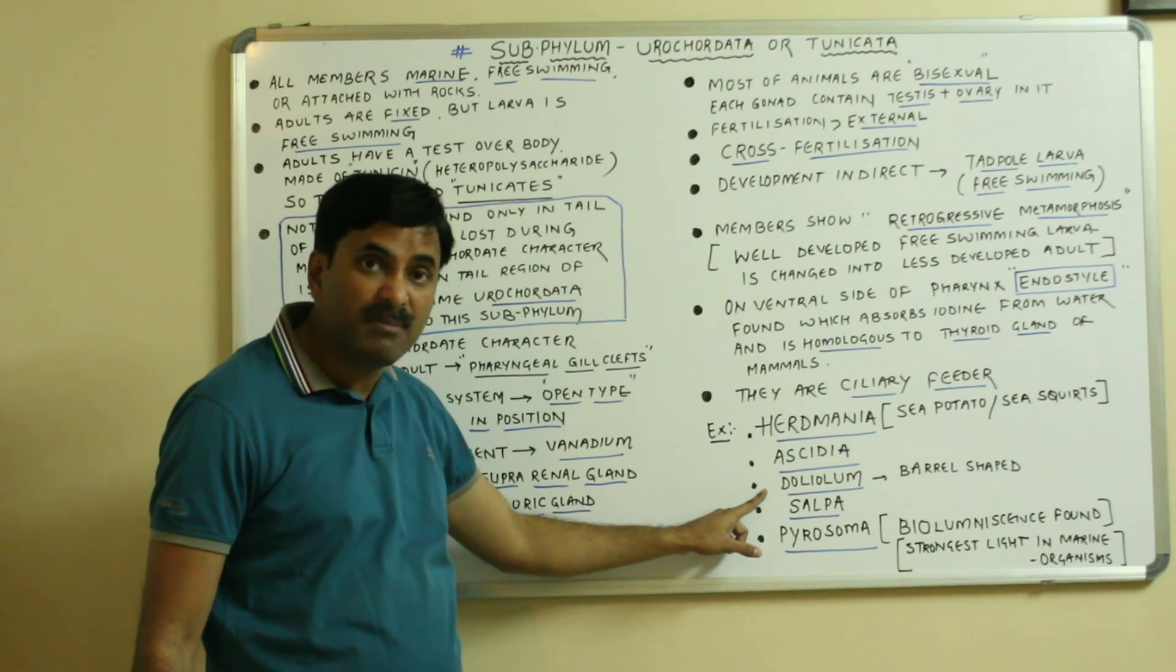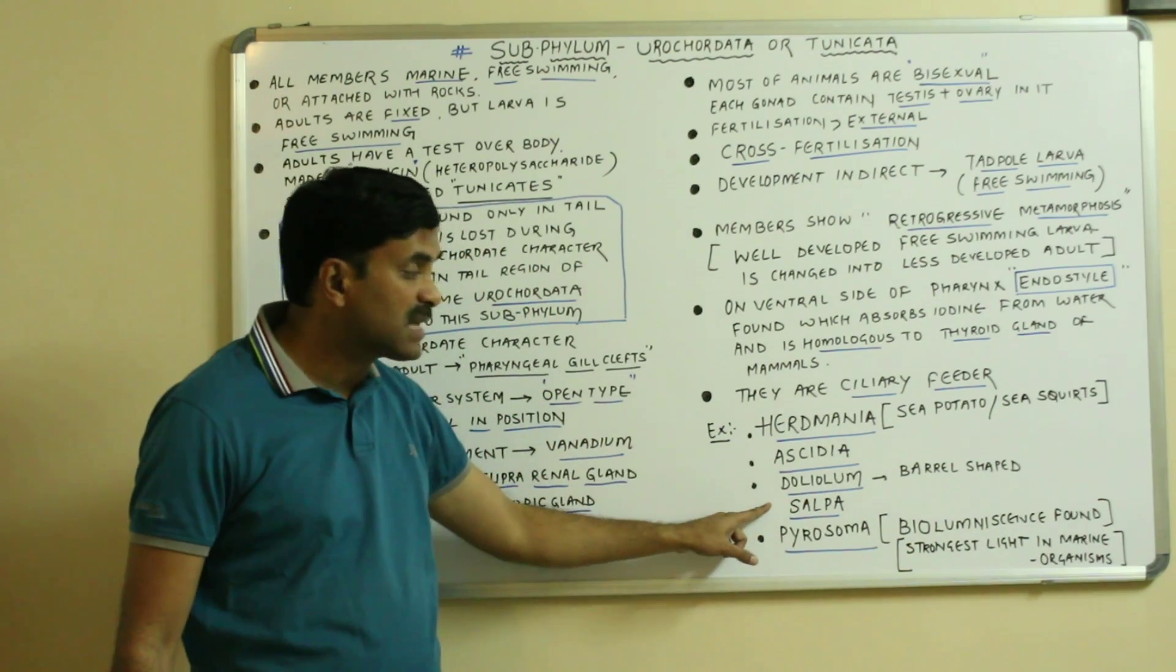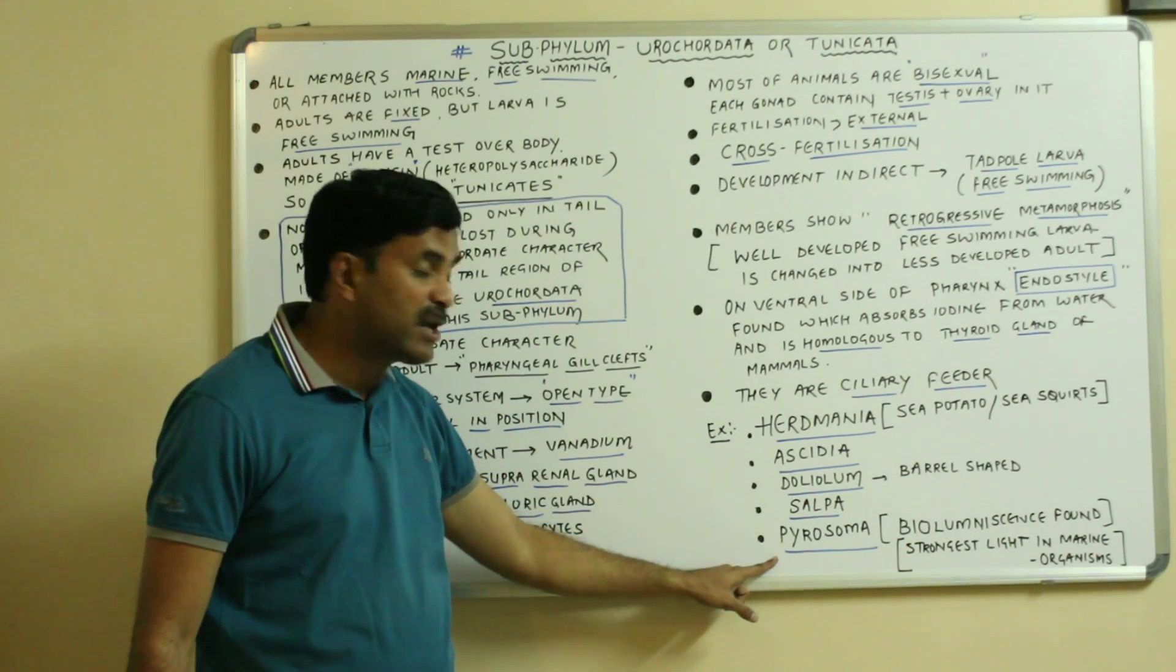Next is the Doliolum, very common member Doliolum which is having the barrel shaped structure. Salpa.